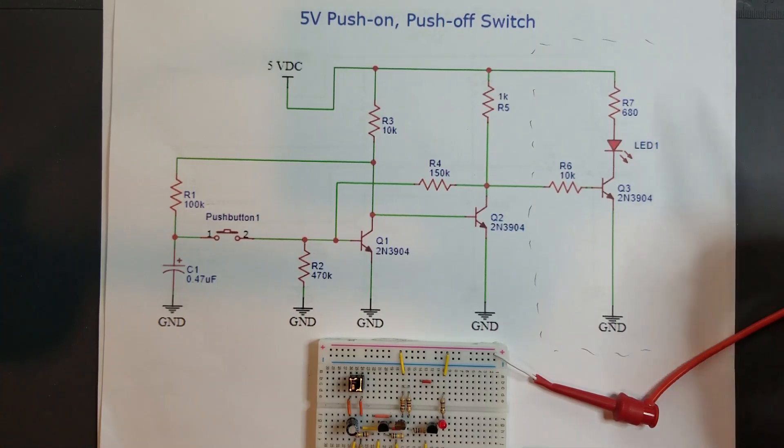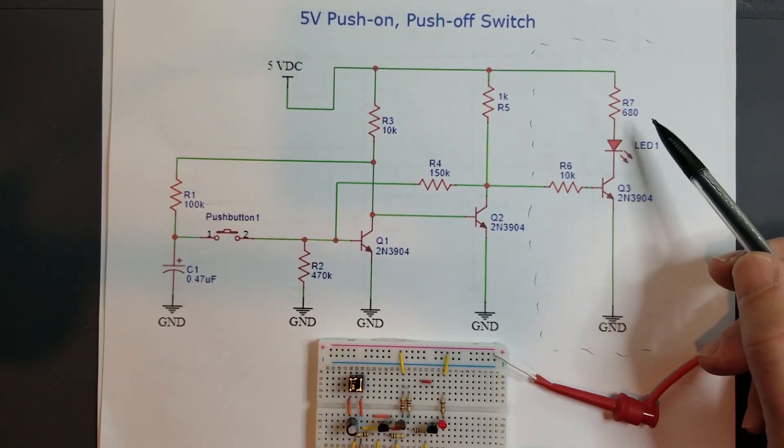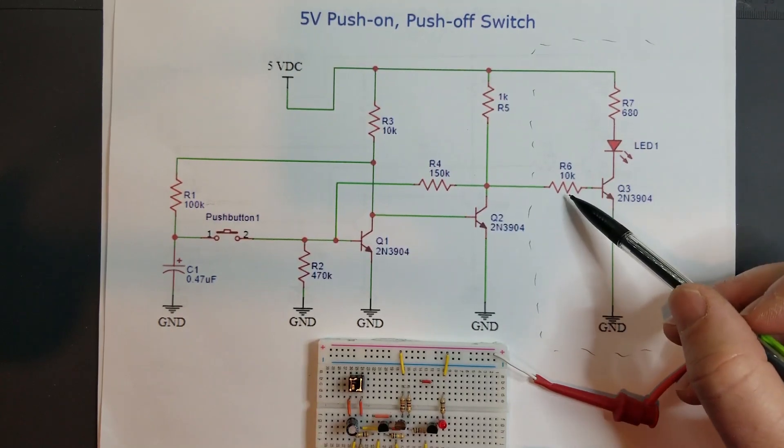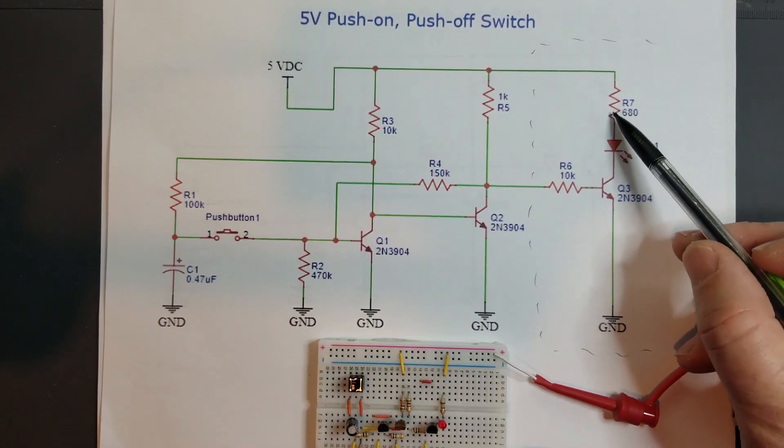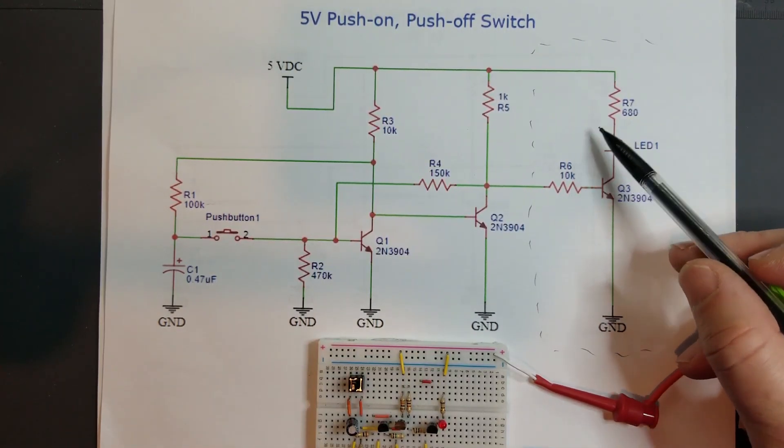So you could actually bring the output resistor as low as 470 ohms without an LED, or you could power a relay that had a 470 ohm coil. What you want to do for this output stage is you want to have at least a 50 to 1 or less ratio between the base resistor and the collector resistance.